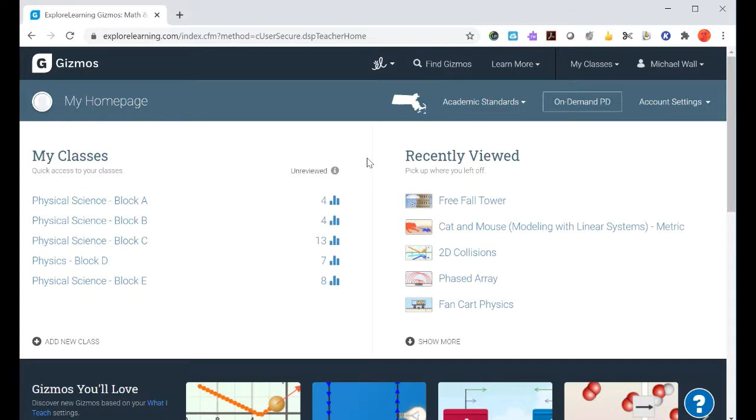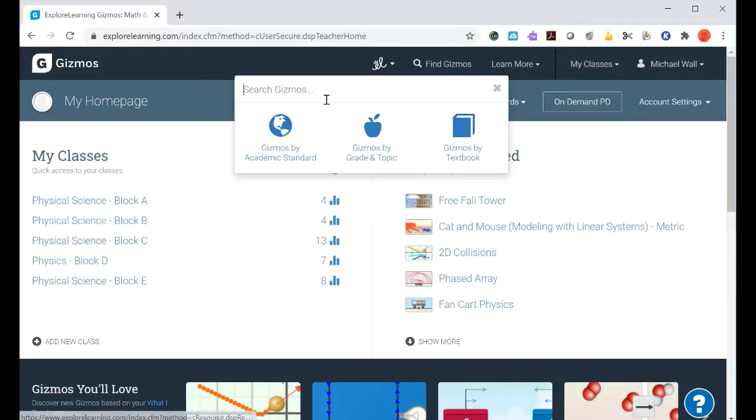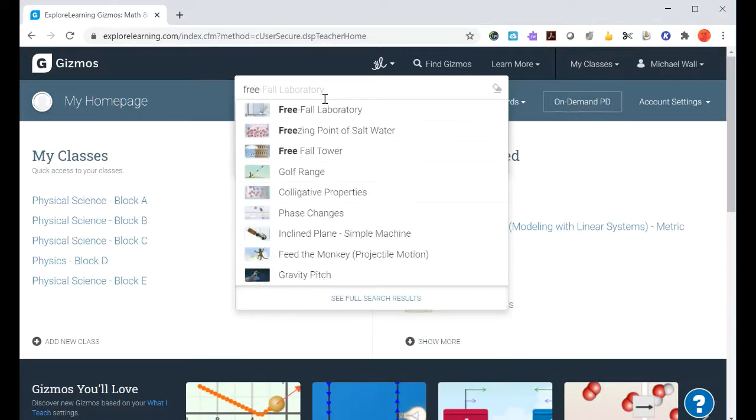Hello students, it's time for another gizmo. This one is called Free Fall Tower. You can get it by clicking on the gizmo in your class or you can do a search for it. We'll just type in 'free' and we have Free Fall Tower. There's another one called Free Fall Laboratory, but this one we're going to do is called Free Fall Tower.